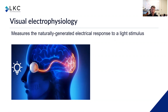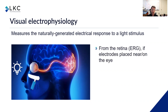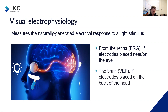Visual electrophysiology uses some kind of light stimulus and then measures that naturally generated electrical response to the light stimulus. If you record under or on the surface of the eye, then you're measuring an electroretinogram, ERG — the response of the retina to that stimulus of light. If instead you put your recording electrode on the back of the head, then you're measuring a VEP, a visual electrical potential from the visual cortex.